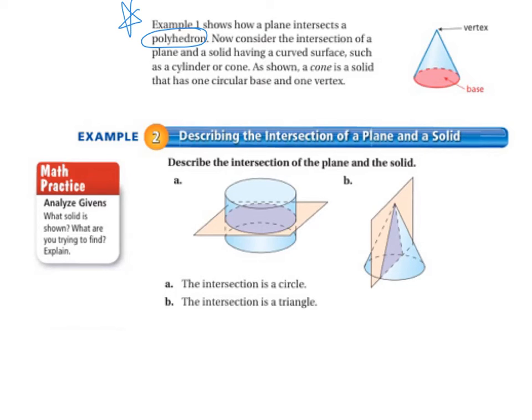So let's look at example 2, describing the intersection of a plane and a solid. Describe the intersection of the plane and the solid. So letter A, the plane intersects parallel to the bases so that the intersection is a circle.